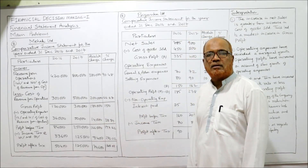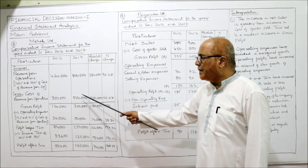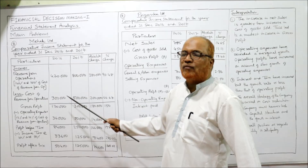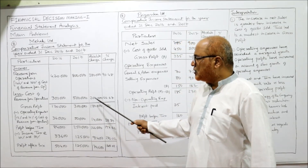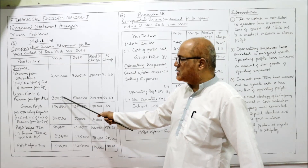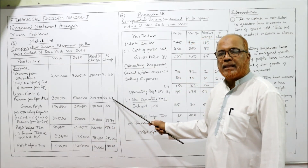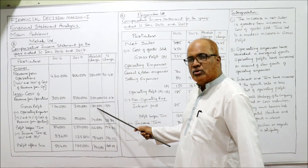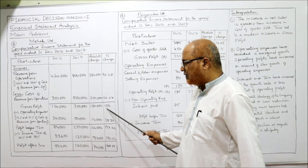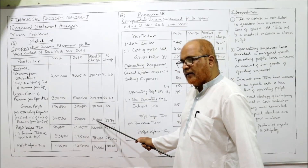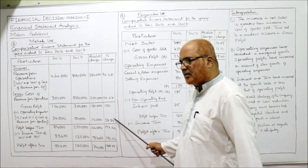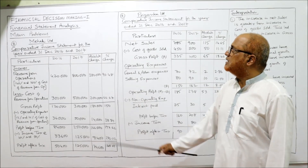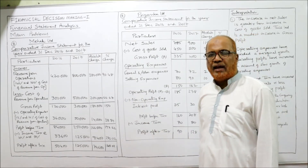For cost of revenue from operations: 5 lakh minus 3 lakh = 2 lakh; 2 lakh divided by 3 lakh into 100 = 66.67%. For gross profit: 3 lakh minus 1,20,000 = 1,80,000; 1,80,000 divided by 1,20,000 into 100 = 150%. For operating expenses: 50,000 minus 36,000 = 14,000; 14,000 divided by 36,000 into 100 = 38.89%. This completes the eighth problem.